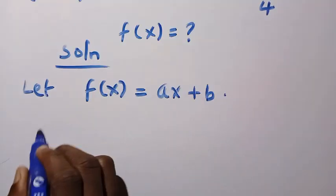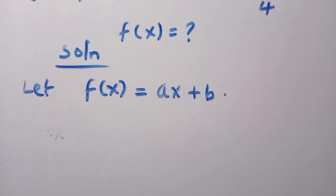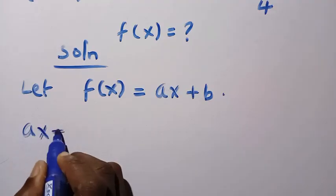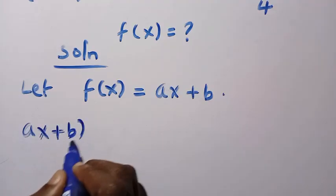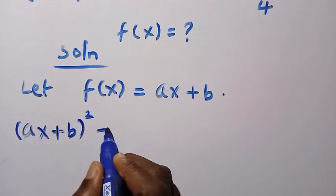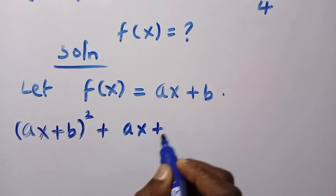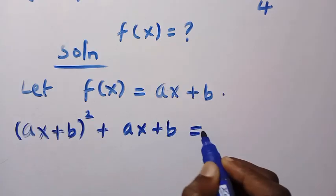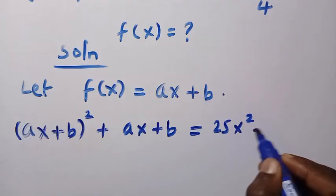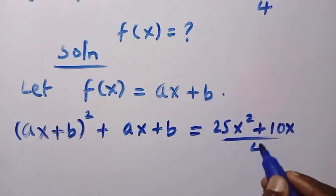we are going to have ax plus b raised to the power of 2 plus ax plus b equals 25x squared plus 10x divided by 4.